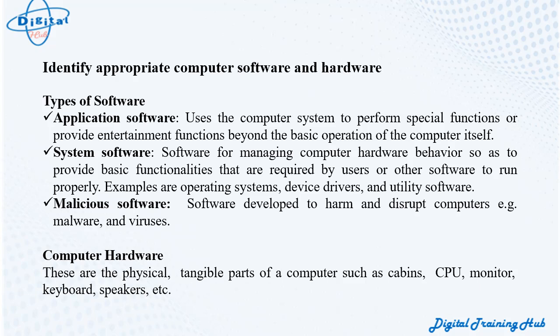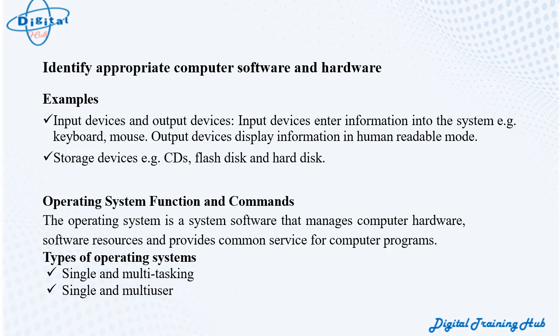Computer hardware refers to the physical, tangible parts of a computer such as the cabinet, CPU, monitor, keyboard, speakers, etc. Input devices enter information into the system, e.g., keyboard and mouse. Output devices display information in human-readable form. Storage devices include CDs, flash disks, and hard disks.